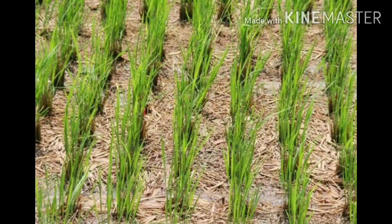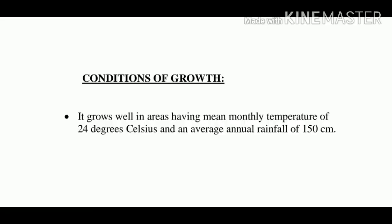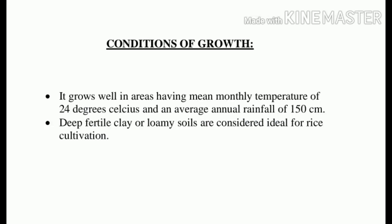Now let us talk about the conditions of growth. Rice is a tropical plant which requires high heat and high humidity. It grows well in areas having a mean monthly temperature of 24 degrees Celsius and an average annual rainfall of 150 cm. Deep fertile, clayey or loamy soils are considered ideal for rice cultivation. Rice is the predominant crop in flood plains and river deltas. The successful growth of rice requires plenty of labor.